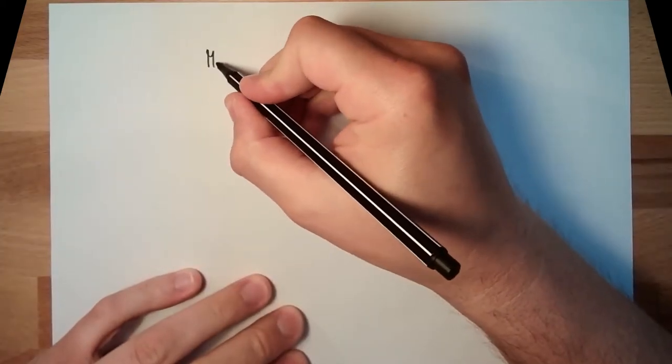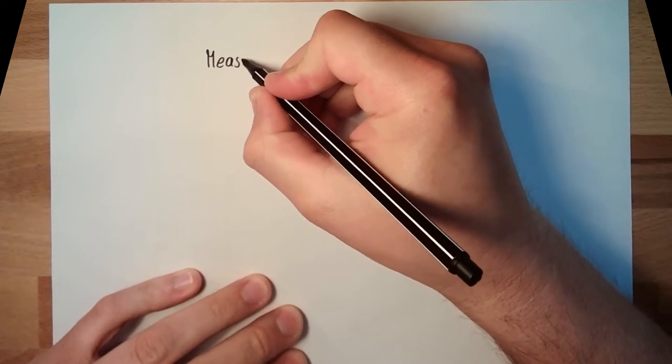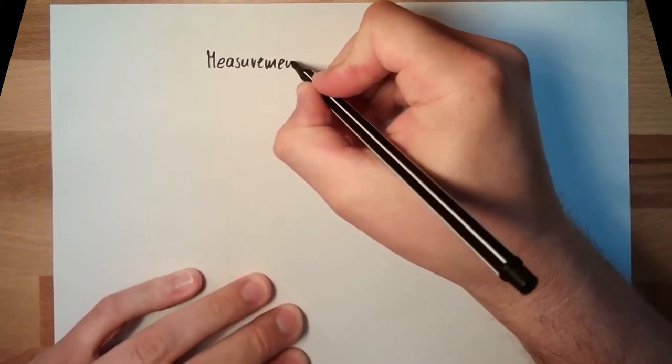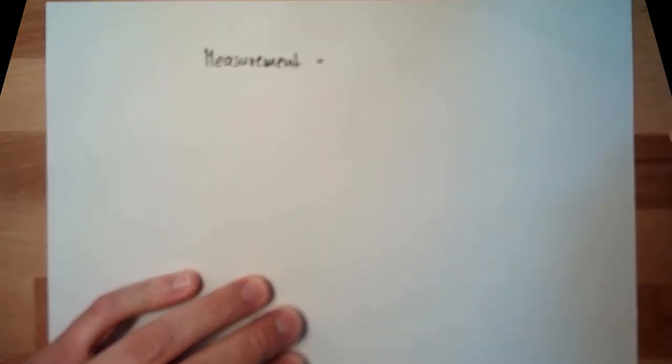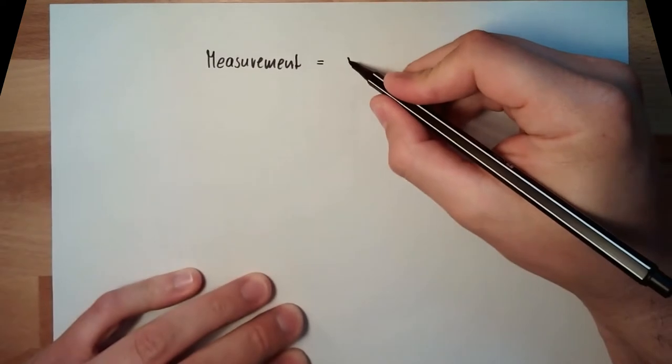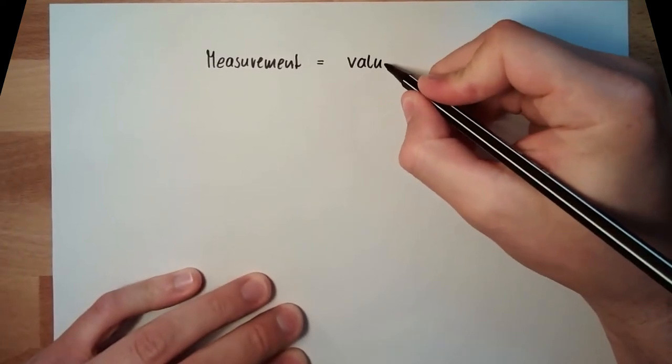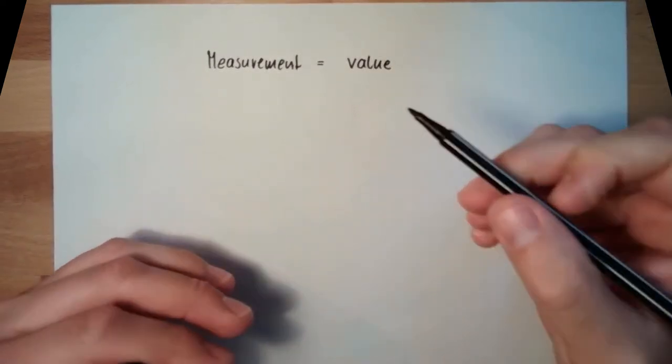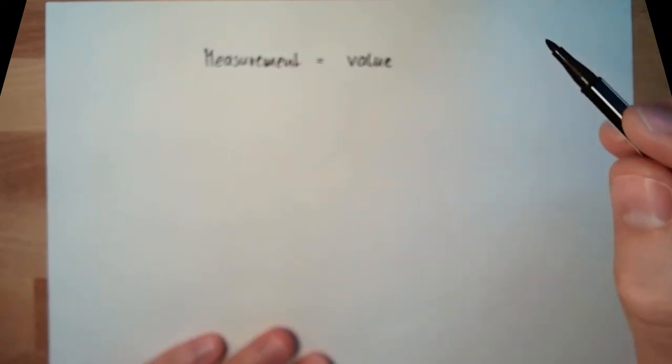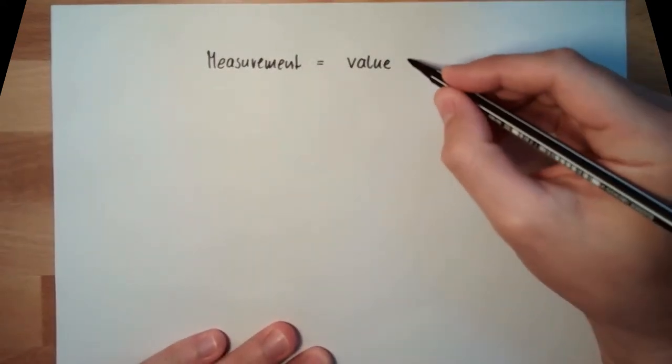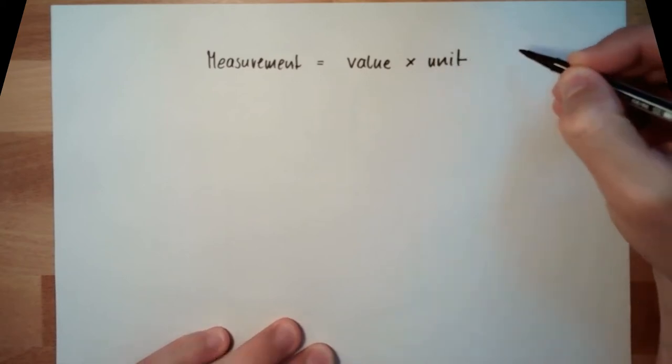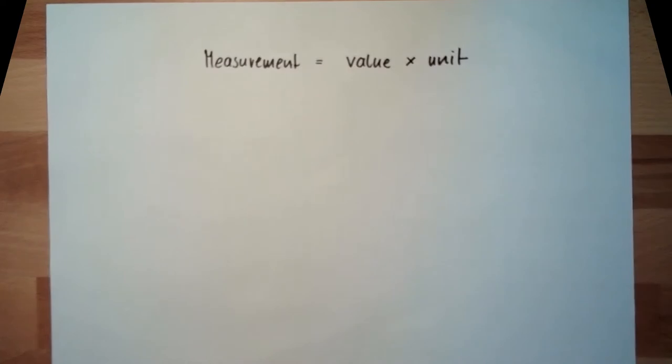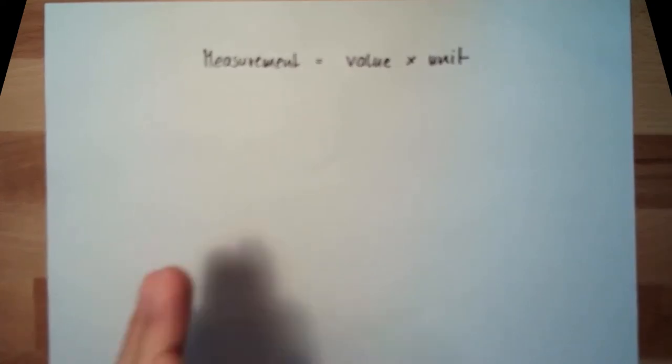So the measurement consists, of course, of a number, digits, so it consists of a value. But the value alone does not say anything. There is also another thing, this is called the unit.